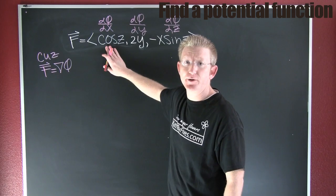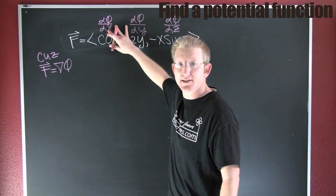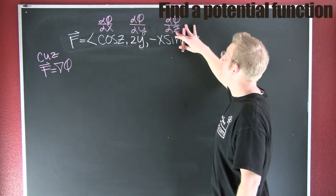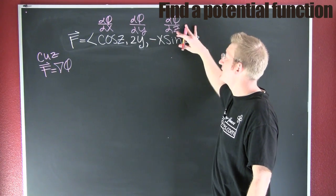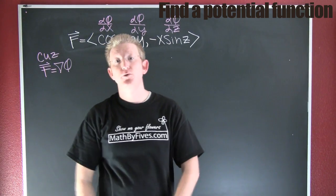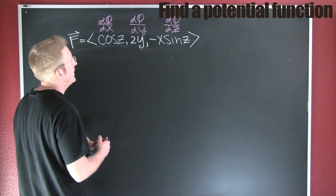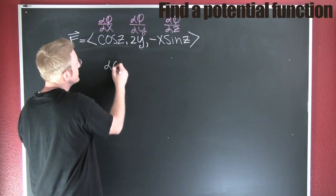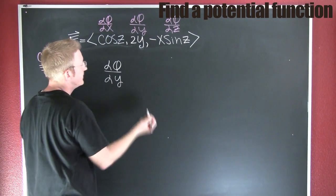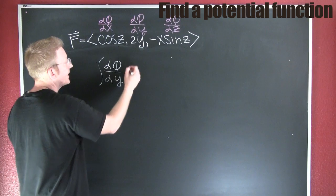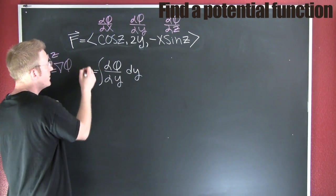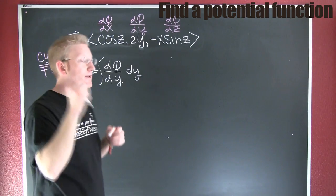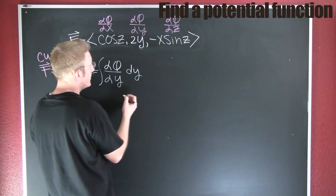Because it's a gradient field, I know my x-component is the partial of my potential with respect to x, my y-component is the partial of my potential with respect to y, and my z-component is the partial of my potential with respect to z. So now I want to find this potential function, and I'm going to look at one of my partials — particularly the partial with respect to y. I want to integrate that with respect to y, which will give me my φ(x, y, z).